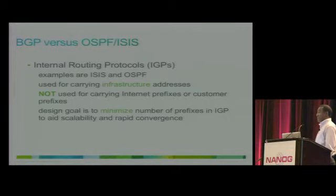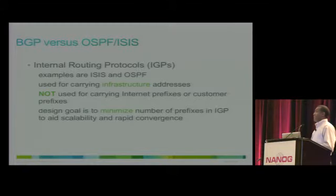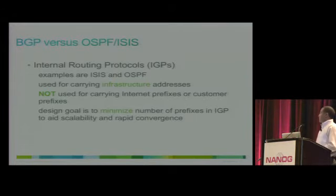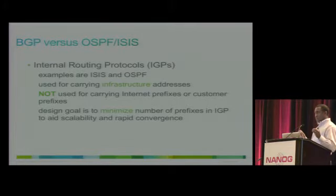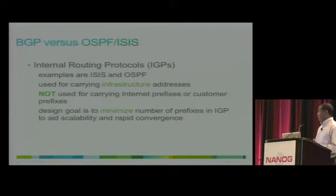Let's discuss BGP versus OSPF and ISIS. OSPF and ISIS are the main IGP protocols used in service providers. The IGPs — ISIS and OSPF — are used to carry infrastructure addresses like interface addresses and loopback IP addresses within the service provider network. They are not used to carry customer addresses or other service provider prefixes. The design goal is to minimize the load on IGP so that IGP converges faster, because BGP recurses into IGP and depends on it. A fast-converging IGP is also important for BGP convergence.